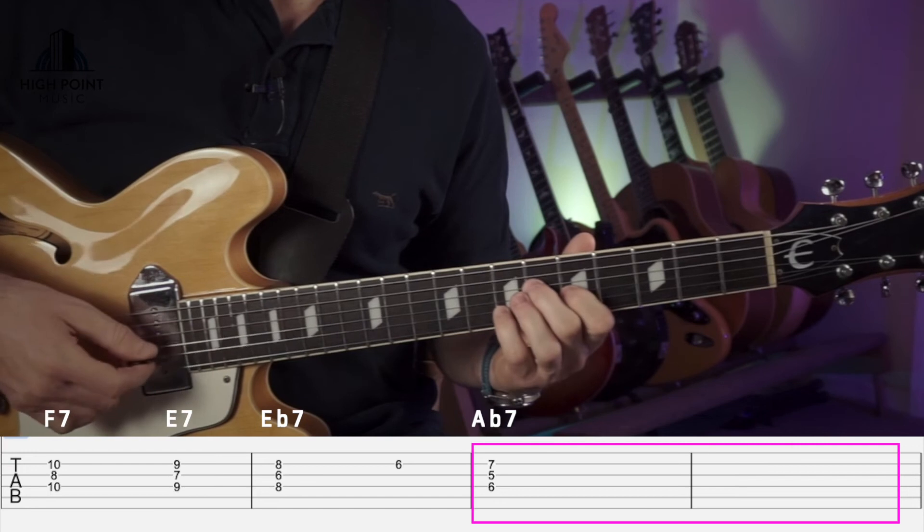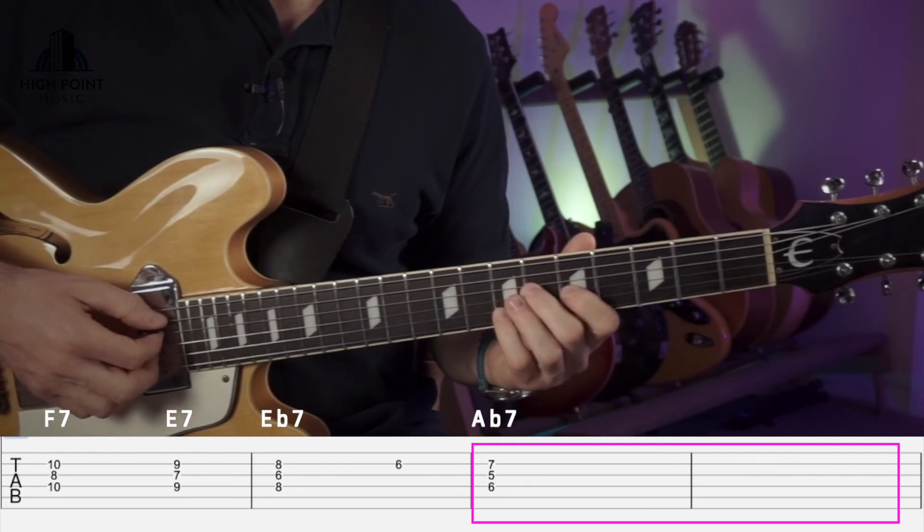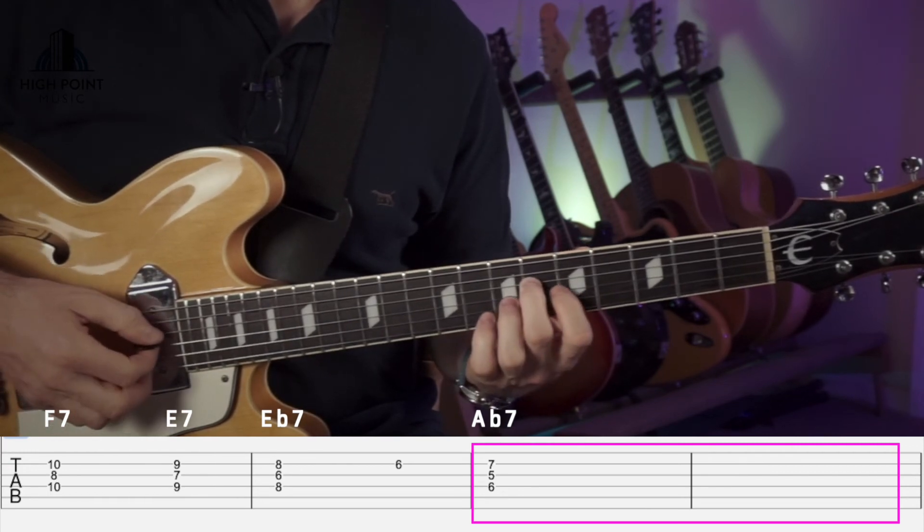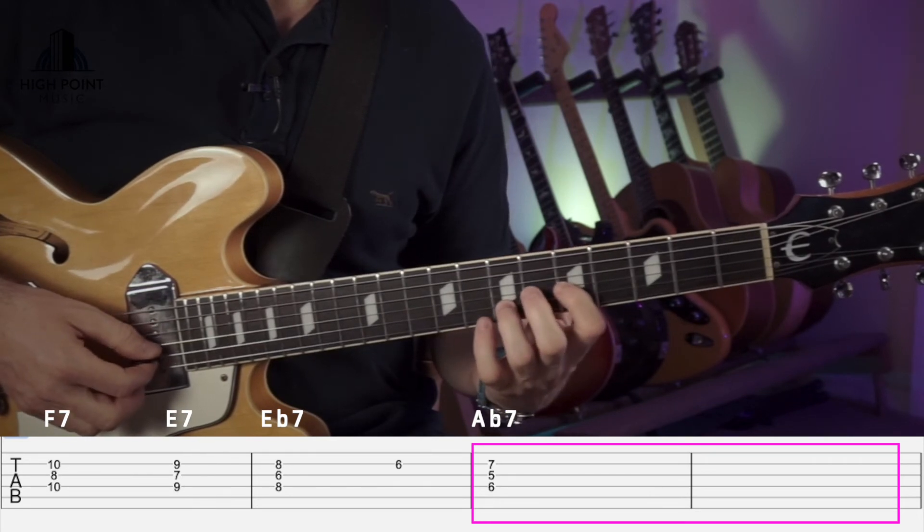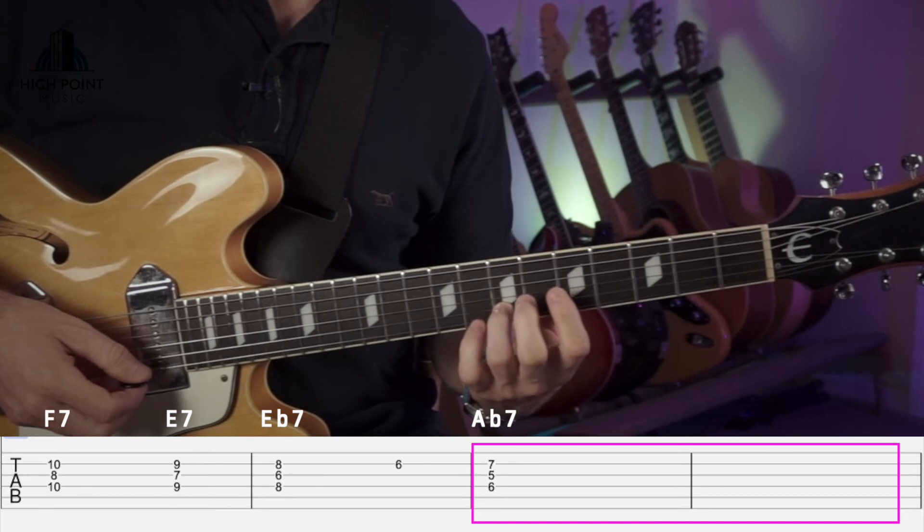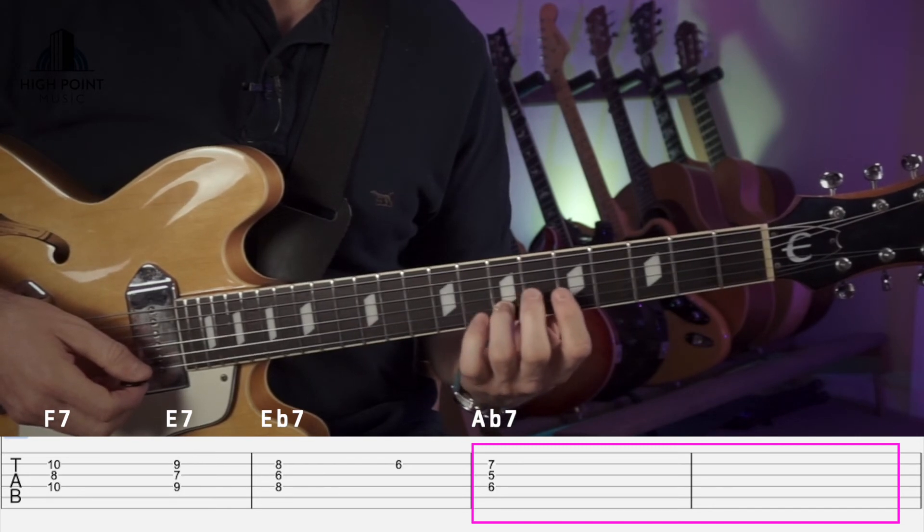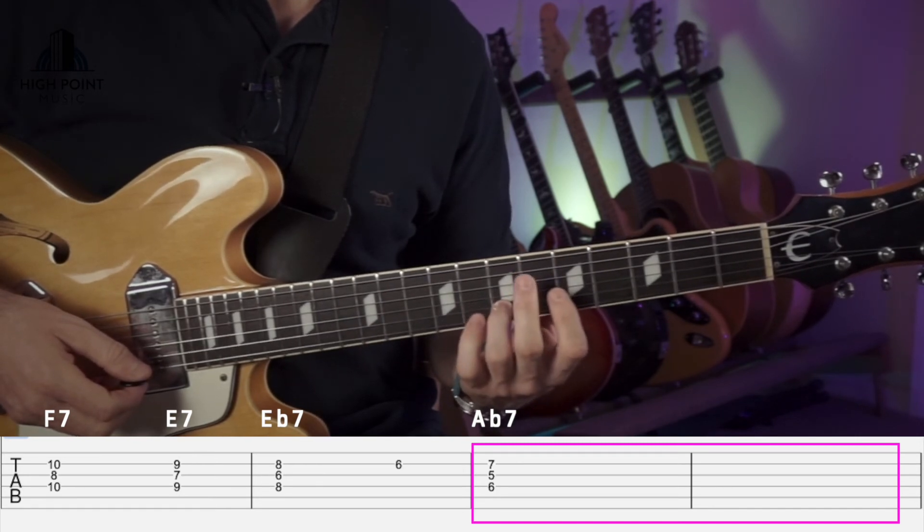And for this Ab7 voicing, we've just got second finger on the sixth fret, first finger on the C which is the fifth fret, and then either your third or your fourth on the seventh fret there to give us the seventh degree of the chord.